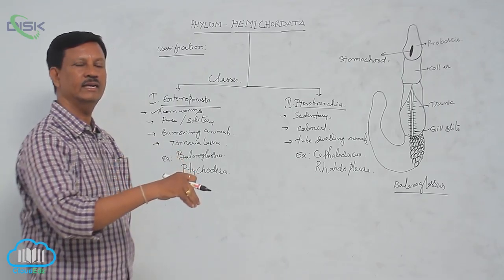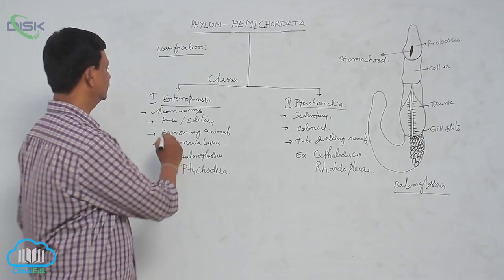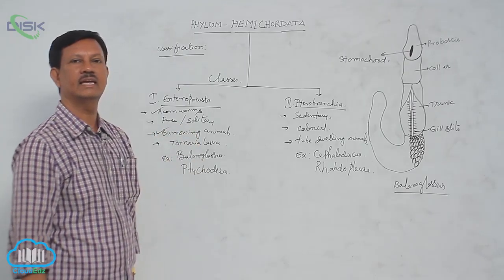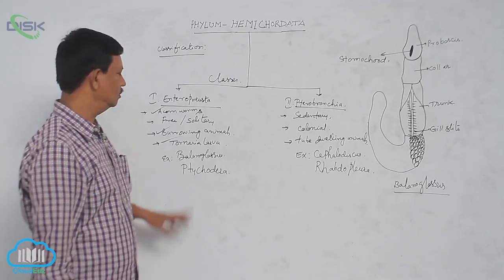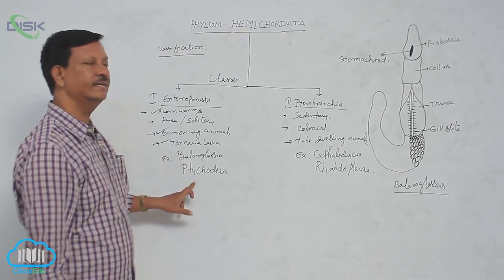They dig the soil and enter into burrows. That's why they are known as burrowing animals. In their life history, Tornaria larva is present. Examples include Balanoglossus and Ptychodera. These are two examples that come under this class.